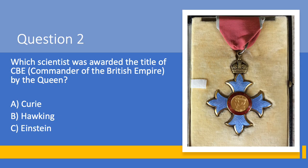Question two. One of our scientists was awarded the title of CBE — Commander of the British Empire — by the Queen. But which of our scientists do you think it was? A. Curie, B. Hawking, or C. Einstein?